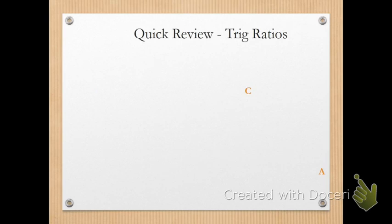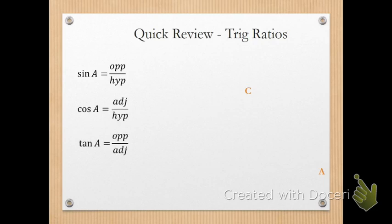A quick review of what you're going to need for your triangle trig ratios. You're going to need your sine of an angle as opposite over hypotenuse, cosine is adjacent over hypotenuse, tangent of an angle as opposite over adjacent. We don't typically use the reciprocal identities here, but you could if you're really comfortable with them.